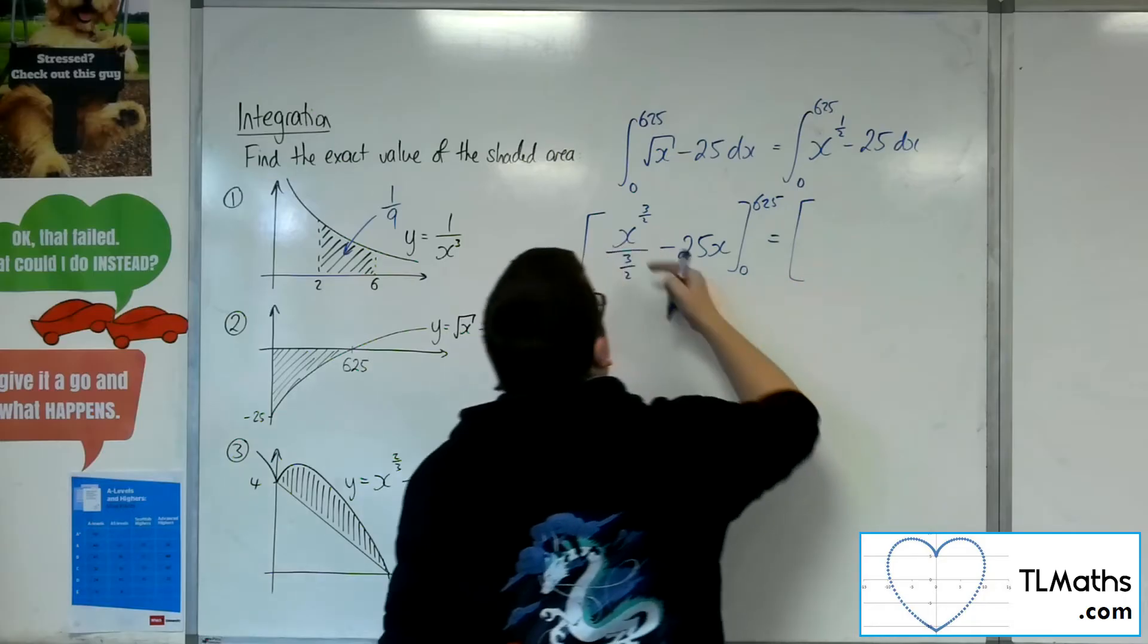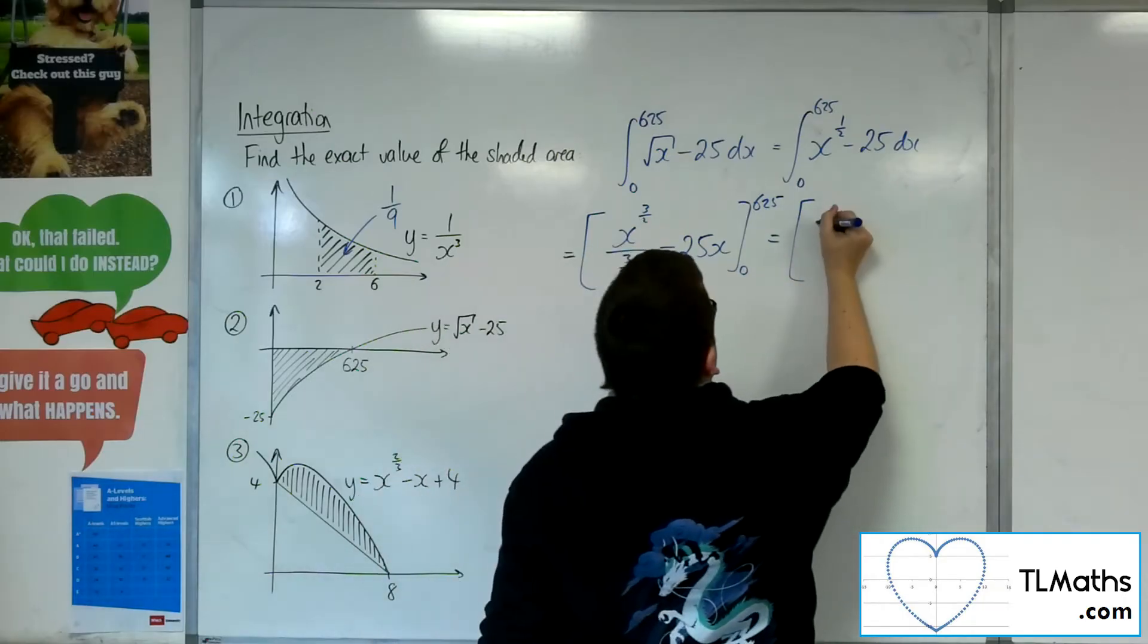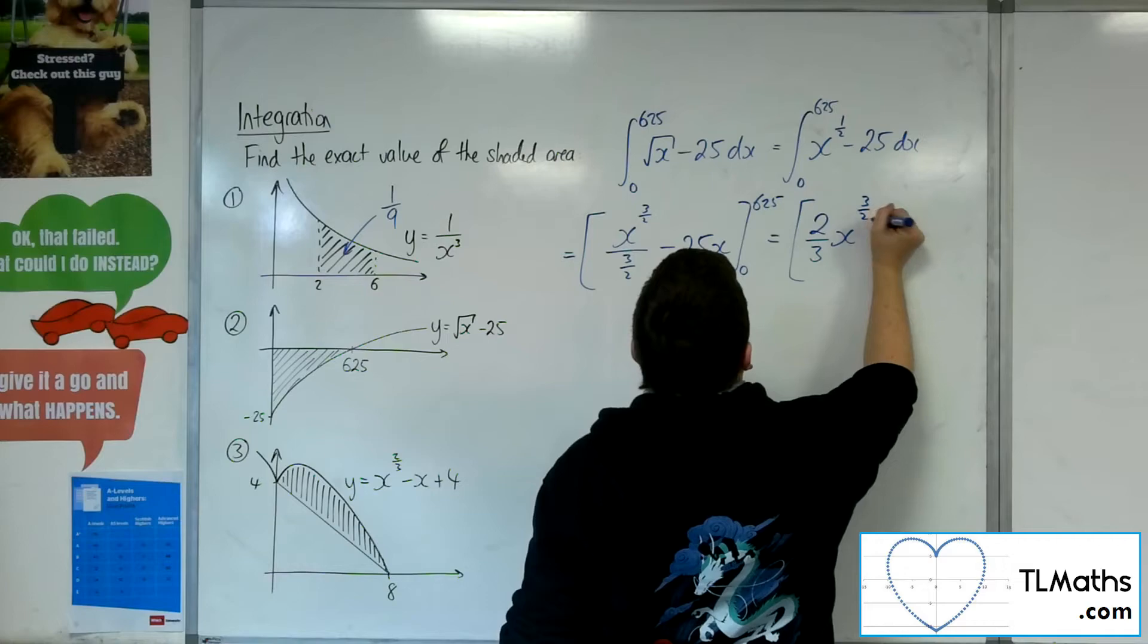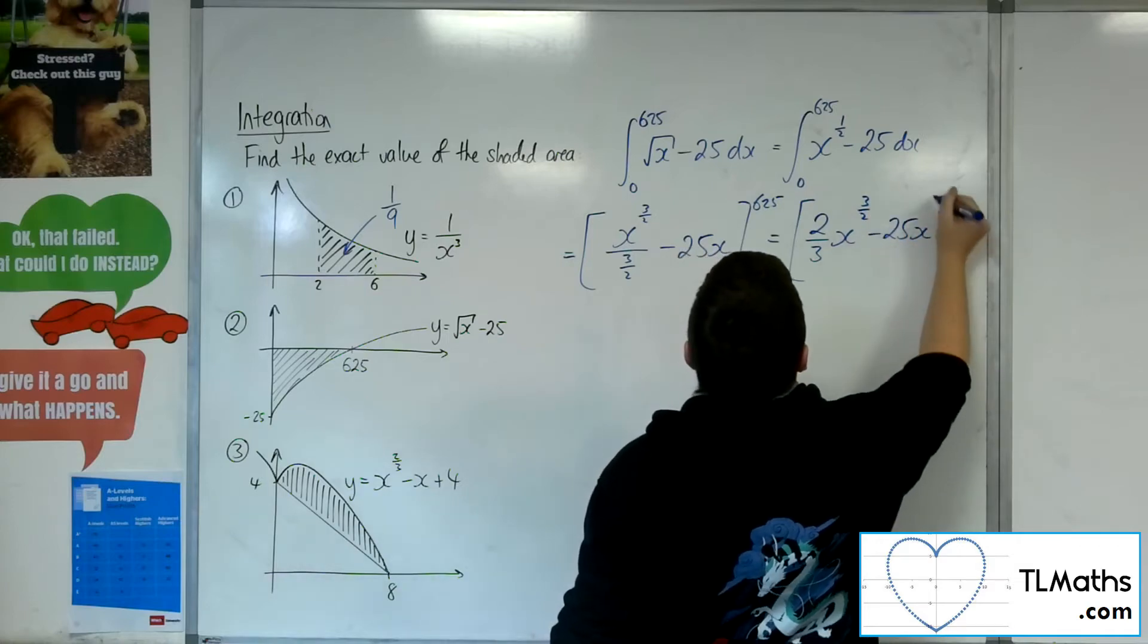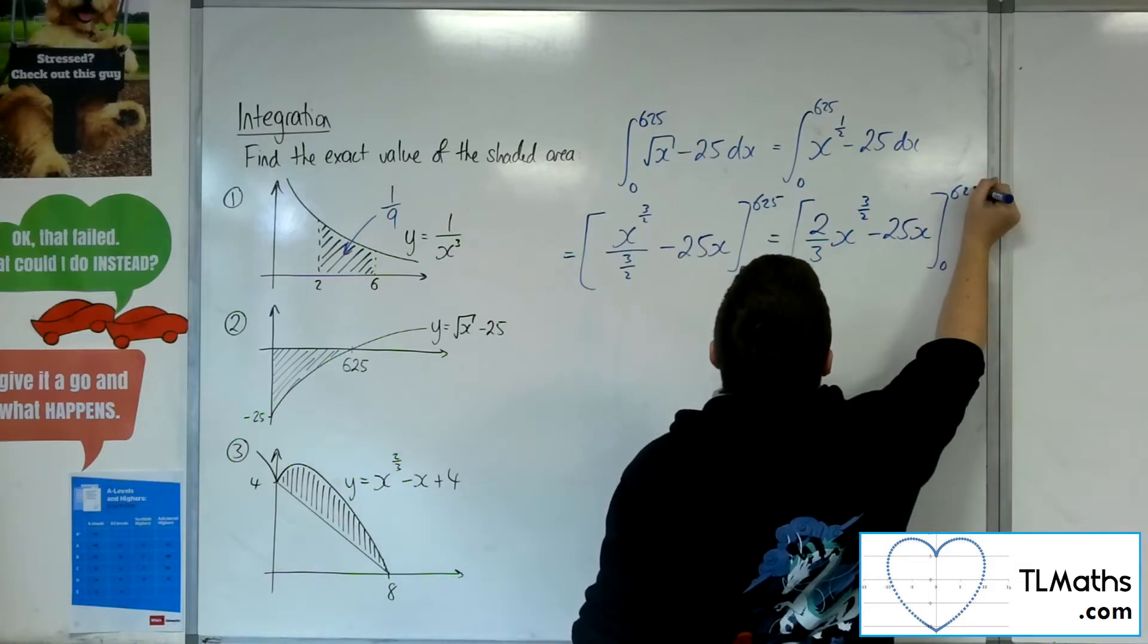Let's tidy that up. So 1 over 3 halves is the same as 2 thirds, so 2 thirds x to the 3 halves, take 25x, evaluated between 0 and 625.